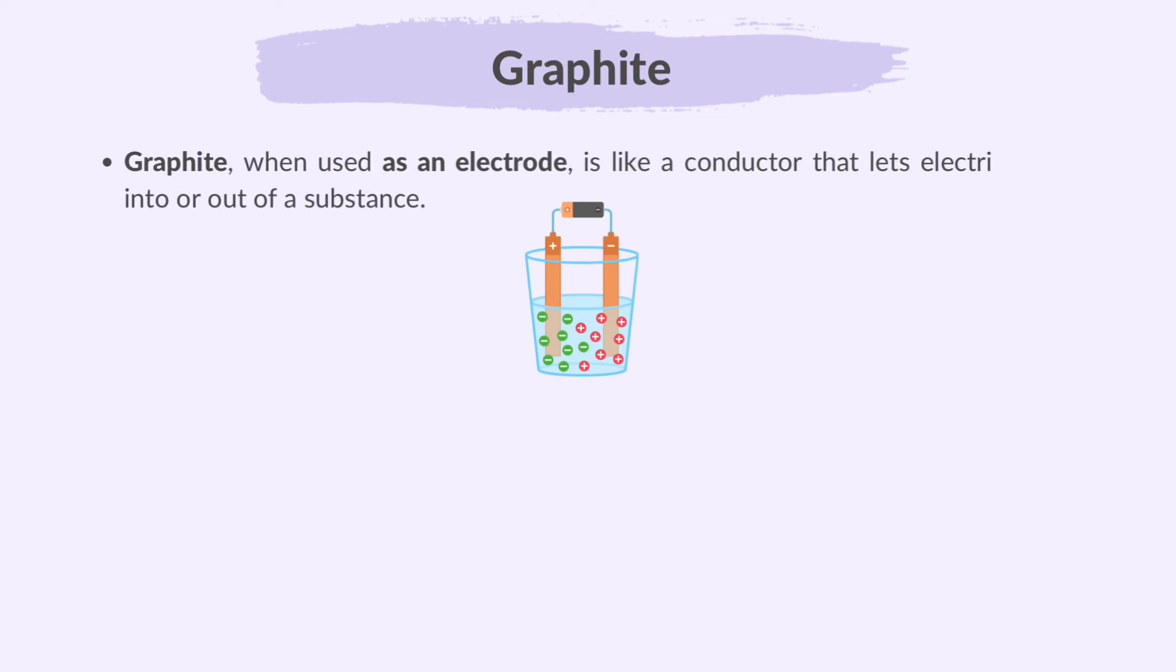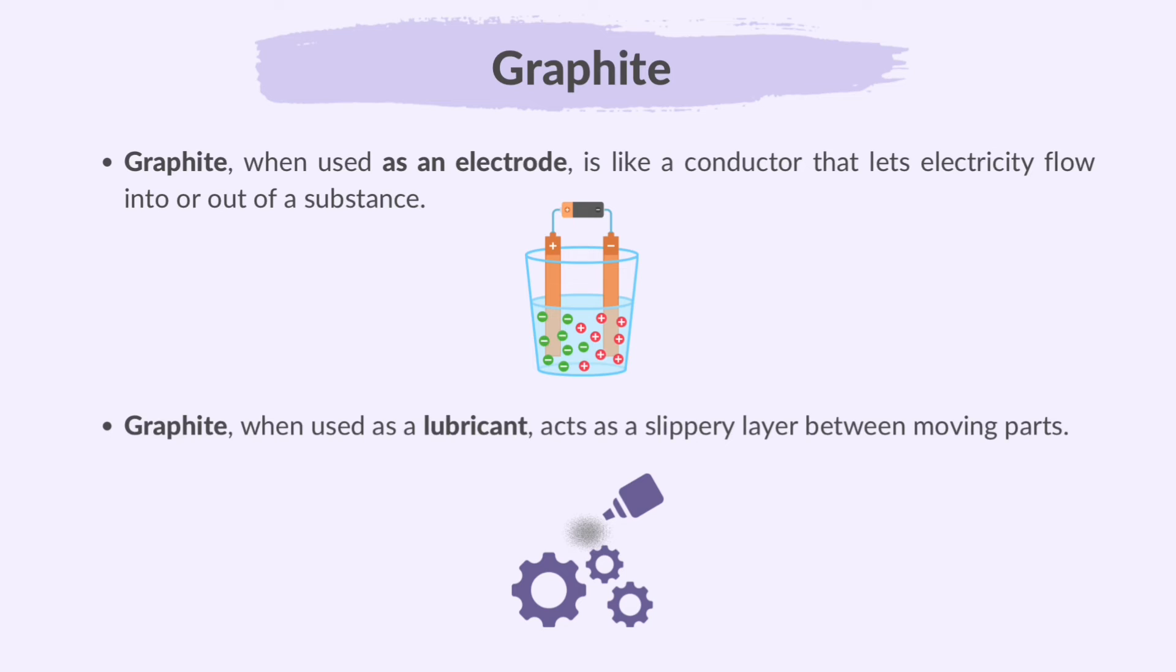So graphite, when used as an electrode, is like a conductor that lets electricity flow into or out of a substance. It's often used in batteries and various chemical processors because it conducts electricity well. Graphite, when used as a lubricant acts as a slippery layer between moving parts. It reduces friction and helps things like machinery or locks work smoothly.